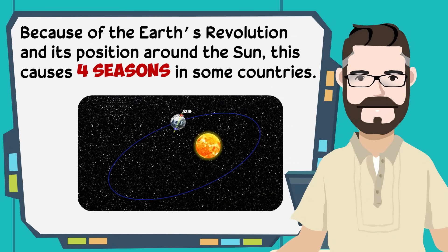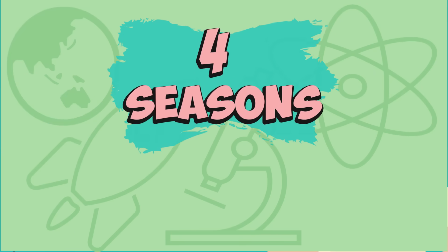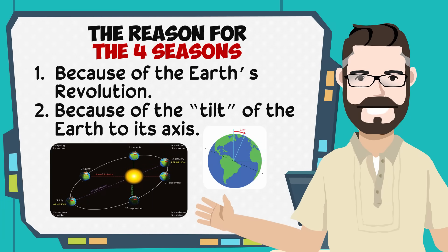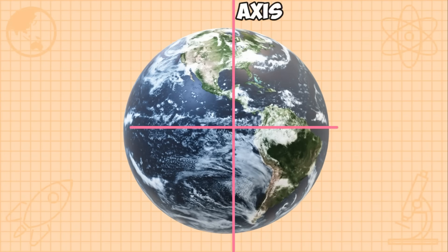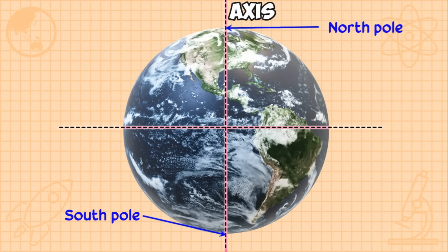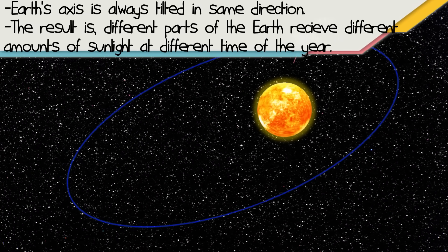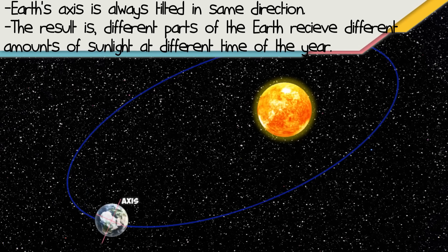Because of the Earth's revolution and its position around the Sun, this causes the four seasons — spring, summer, autumn, and winter — in some countries. This happens for two main reasons: number one is the Earth's revolution, and number two is the tilt of the Earth on its axis. The Earth actually tilts at 23 degrees. As a result, different parts of the Earth receive different amounts of sunlight or solar radiation at different times of the year.